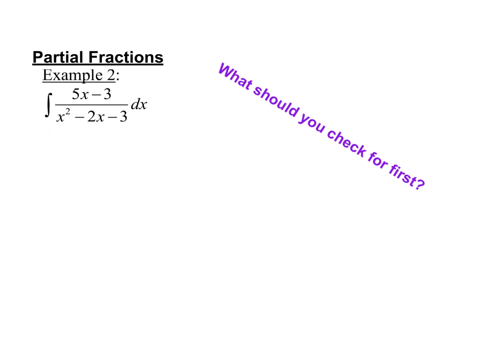Is there a way to manipulate this to use 2x minus 2? No, it isn't. If this was just an x up here, or a 2x, or maybe a 4x, possibly. But in this case, u-substitution is not going to work.